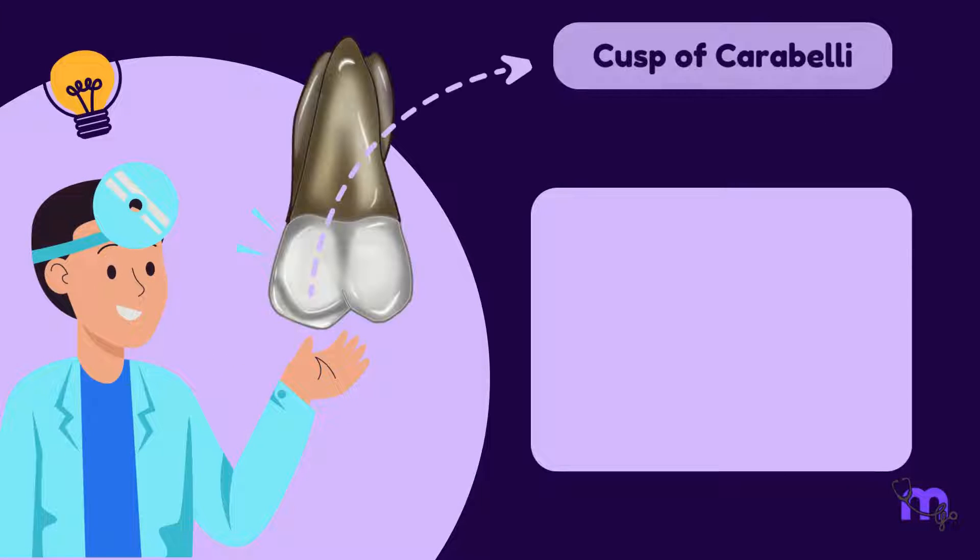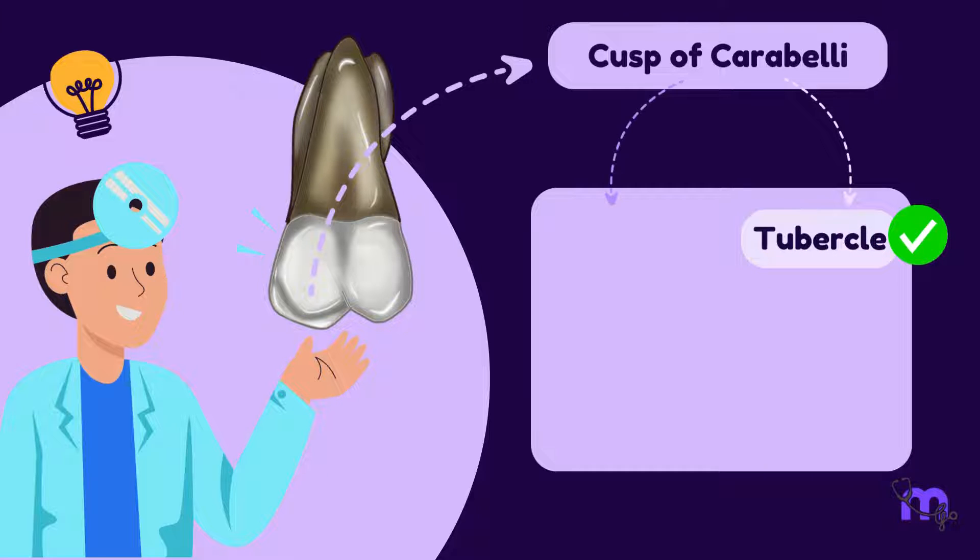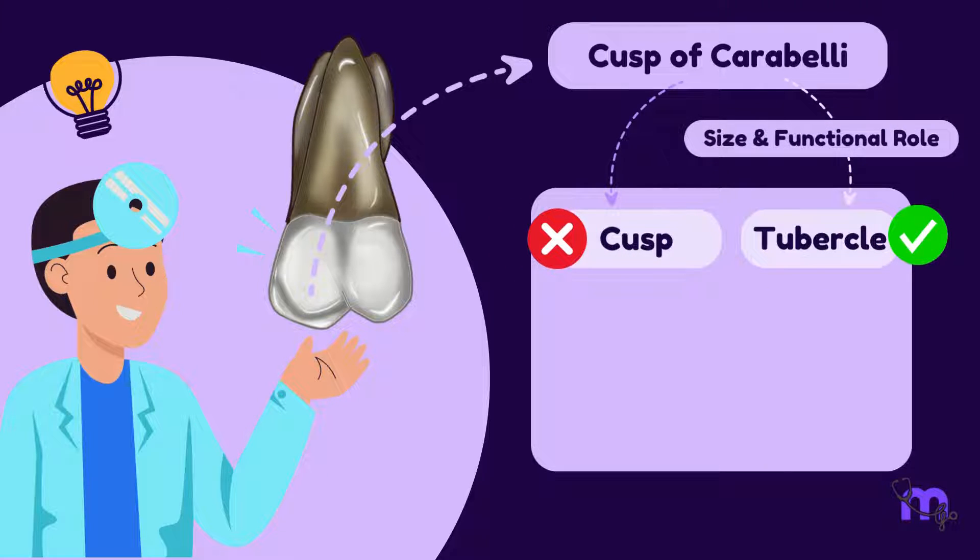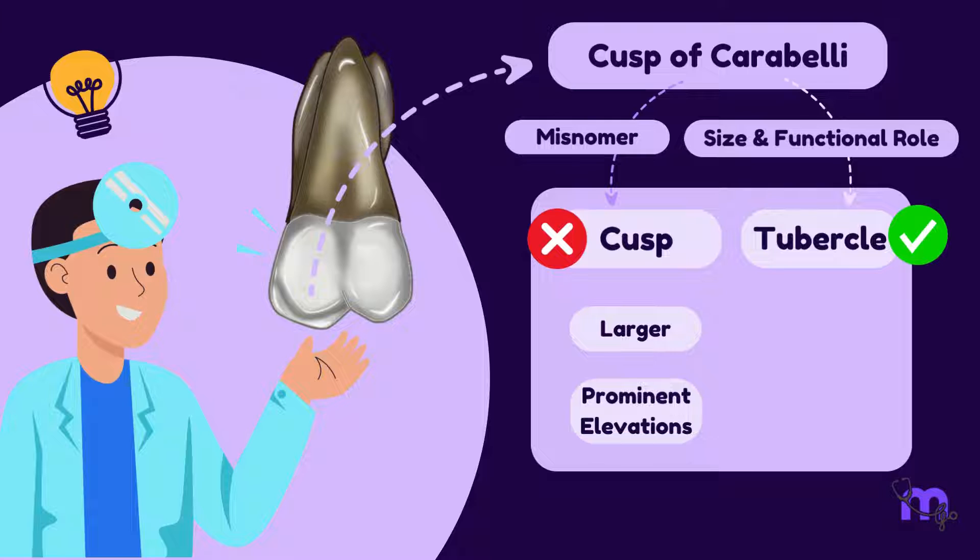Remember, the cusp of Carabelli is often referred to as a tubercle rather than a cusp, due to its size and functional role. While cusps are usually larger, more prominent elevations on teeth, a tubercle is a smaller rounded projection. More details of it will be covered in our upcoming video on maxillary first molar.